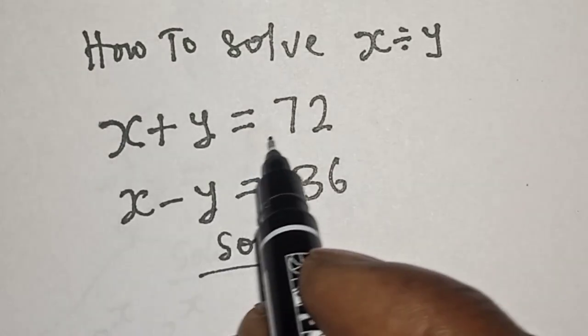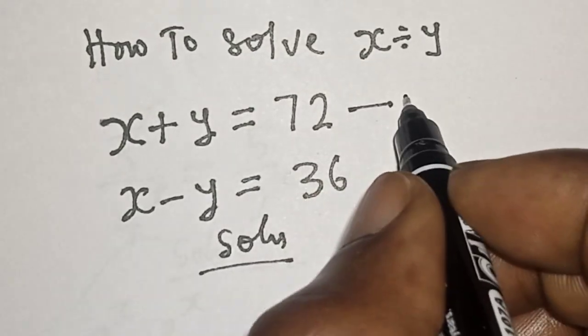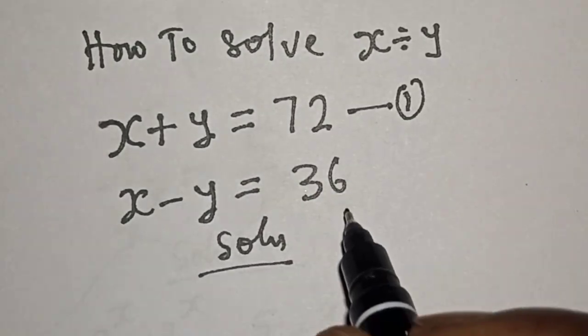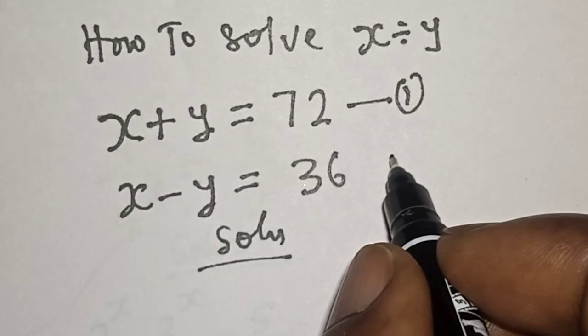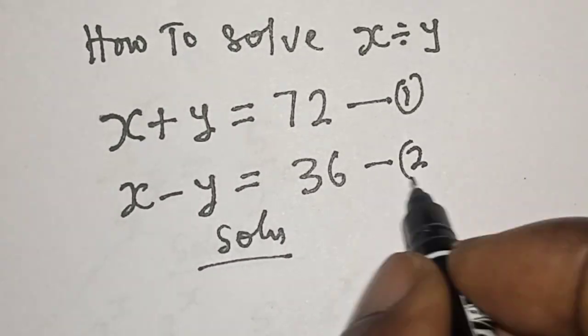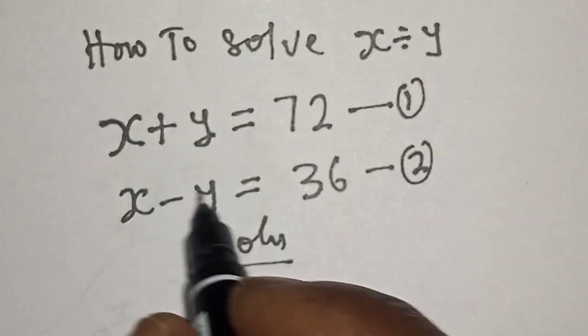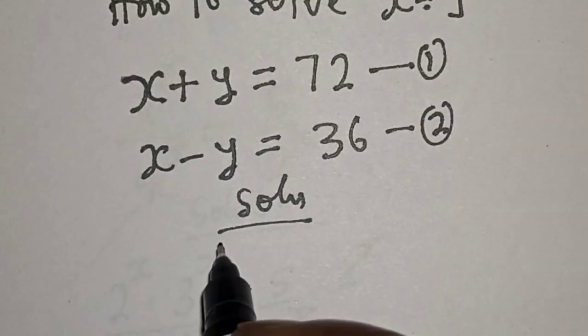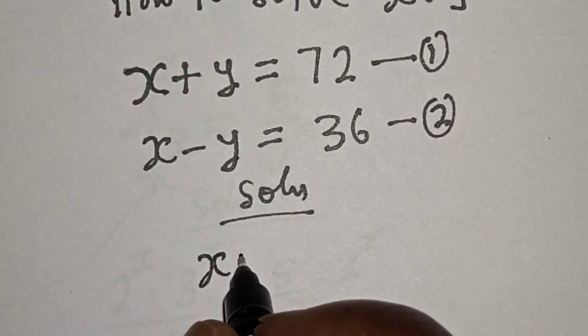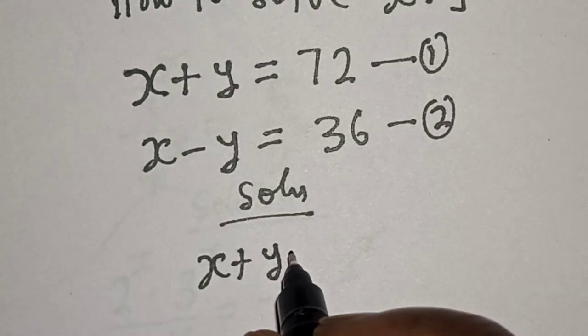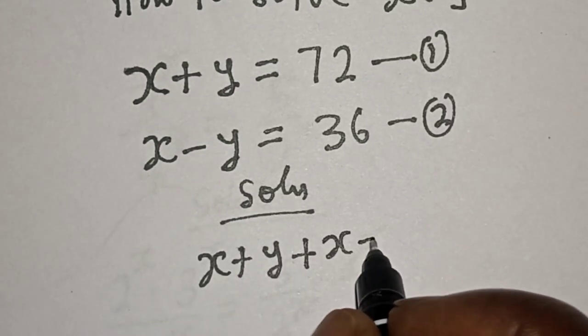x plus y equals 72, let's call this equation 1. x minus y equals 36, let's call this equation 2. Then let's add equation 1 and equation 2 together. That is x plus y plus x minus y